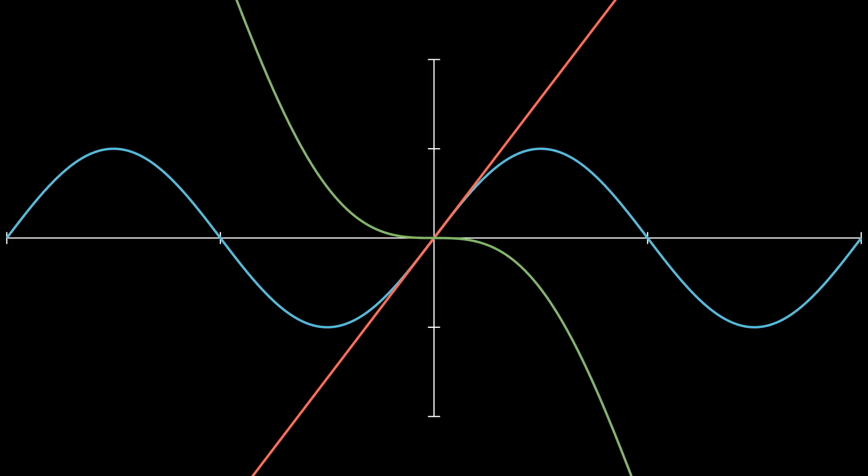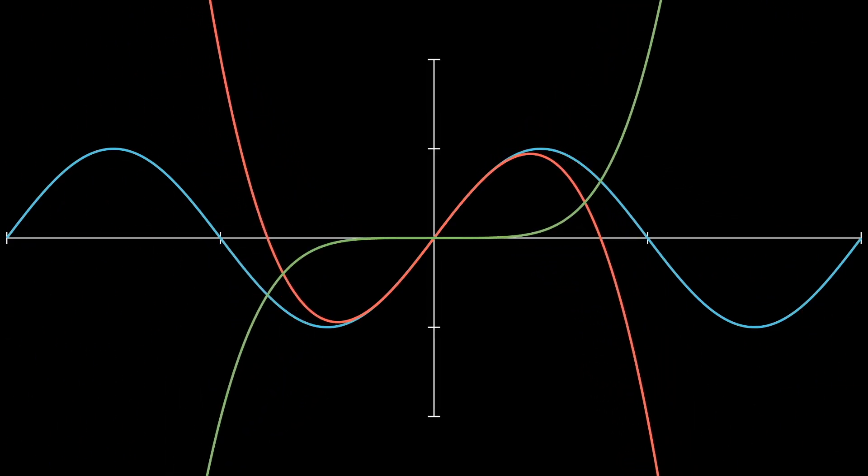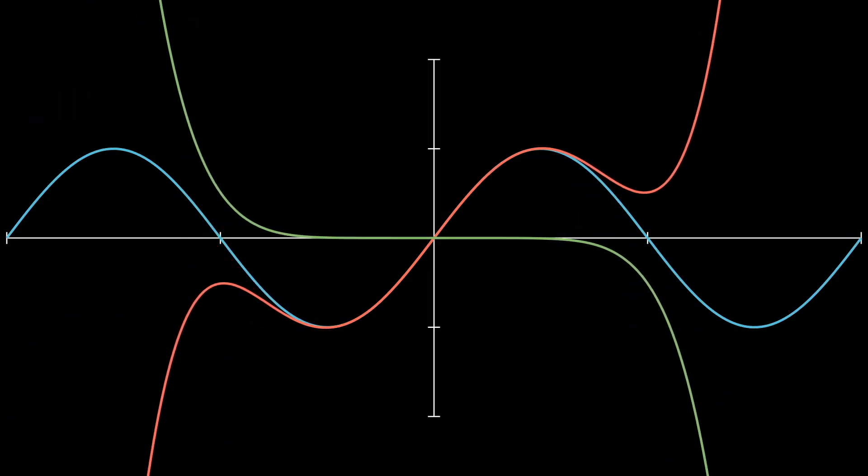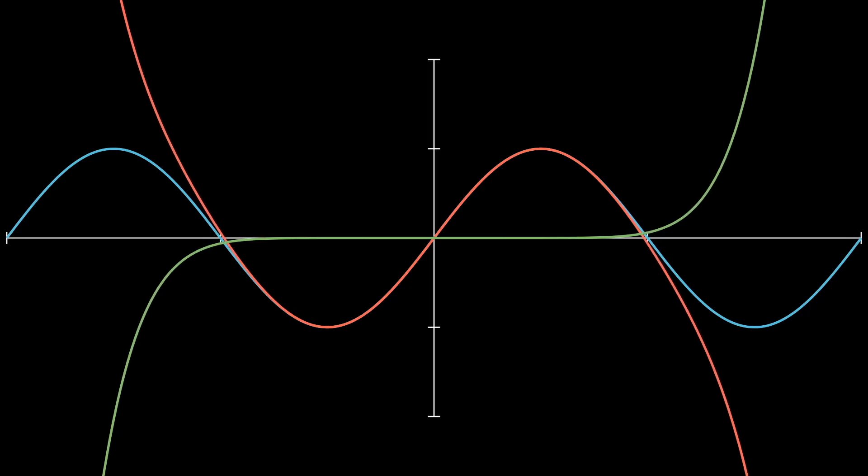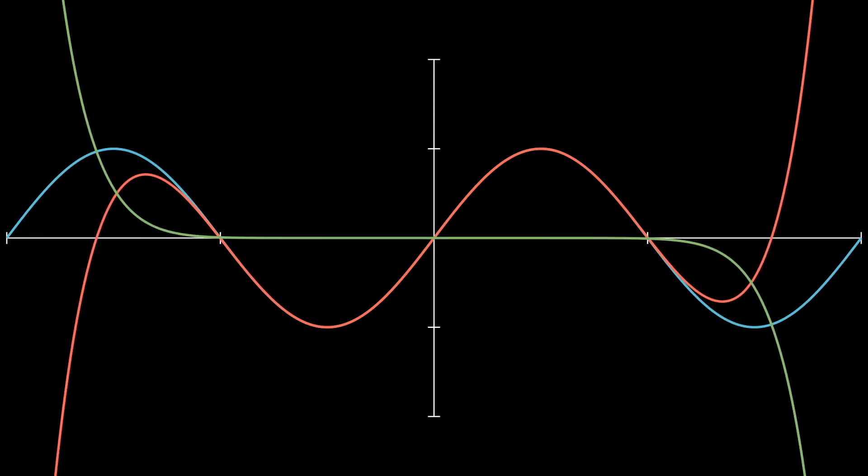The reason this approximation accumulates an error so quickly is because it doesn't take into account the curvature of the sine function. To deal with this, you can add more terms. By analyzing the error between the approximation and the function, we can prove that not only does the approximation get better, but in the limit, it is the function.